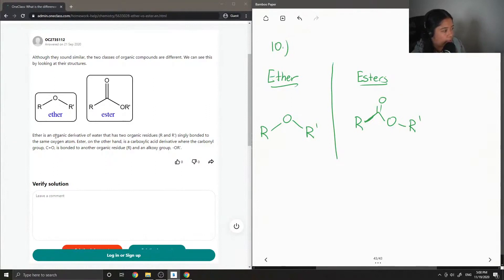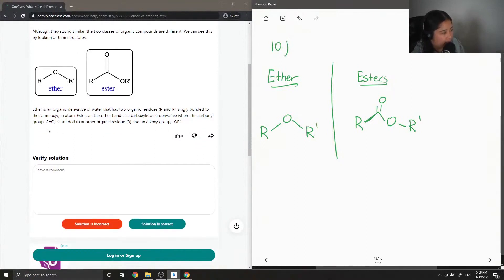Ether is an organic derivative of water that has two organic residues, R and R prime, simply bonded to the same oxygen atom. Ester, on the other hand, is a carboxylic acid derivative, where the carbonyl group is bonded to another organic residue and an epoxy group.